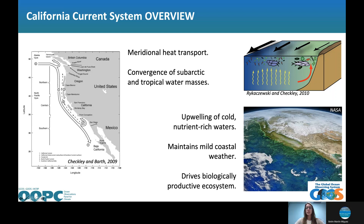In the vertical, we care a lot about this current system because of the vertical upwelling of cold and nutrient-rich waters. These upwelling mechanisms help maintain our mild coastal weather — here in San Diego it's gloomy, so we tend to have pretty mild Mediterranean-type weather, largely due to the cold water offshore. This cold water brings nutrients to the surface, so we have a very biologically productive current system, as shown here in this satellite image of chlorophyll, where green represents high chlorophyll concentrations.